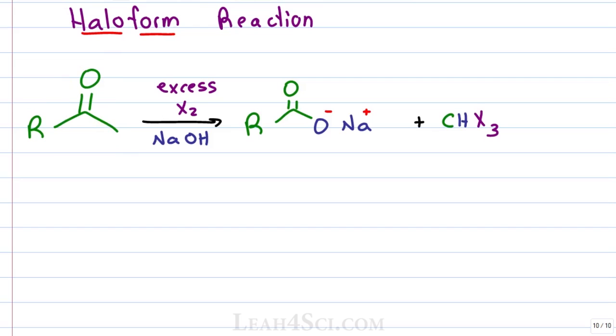When reacted with excess halogen and base, the product will be a carboxylate which is the conjugate base of a carboxylic acid and a haloform which is a one carbon hydrogen, three halogen containing compound. The haloforms could be chloroform, bromoform and iodoform.